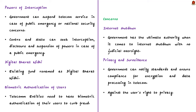Thirdly, regarding powers of interception — the bill gives enormous power to the central government. The government can suspend, assume control of, or oversee any telecom service in case of public emergency or national security concerns. Both central and state governments or authorized officers can seek interception, disclosure, and suspension of services in case of public emergency or safety. Fourthly, Digital Bharat Nidhi — the existing fund for telecom services in underserved areas has been renamed Digital Bharat Nidhi and will also be used for research and development. Fifthly, biometric authentication of users will be mandatory for telecom entities to curb fraud.